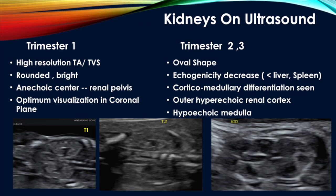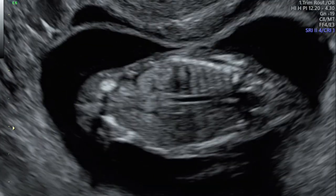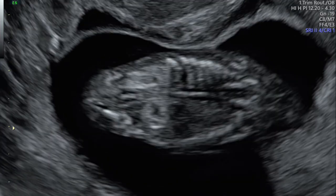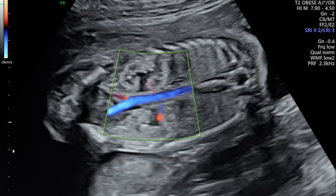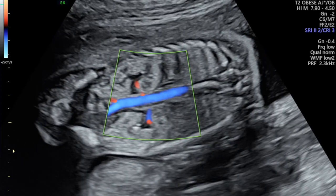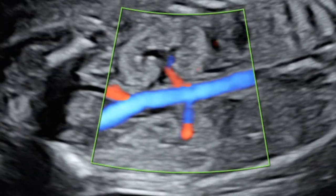In the first trimester with high-resolution transabdominal or transvaginal ultrasound, the kidneys are seen as rounded, bright structures with an anechoic center representing the renal pelvis. Optimal visualization in the first trimester is in the coronal plane. In the second and third trimester we see the typical oval shape of the kidneys, their echogenicity decreases and becomes less than that of the liver and spleen. Corticomedullary differentiation is seen better in the late second trimester and third trimester — the outer hyperechoic layer is the renal cortex while the hypoechoic center is the renal medulla.